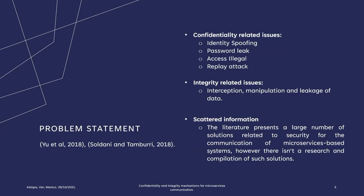Similar to others, these issues compromise the architecture's internal infrastructure. Issues related to confidentiality include vulnerabilities such as spoofing, illegal access, and replay attacks. And regarding integrity, there are problems such as interception, manipulation, and leakage. As mentioned in the study, the literature presents a large number of solutions related to security for the communication of microservice-based systems, but the fact that there isn't a research compilation of the security methods that can address these problems makes it difficult for practitioners to adopt novel security-related solutions.